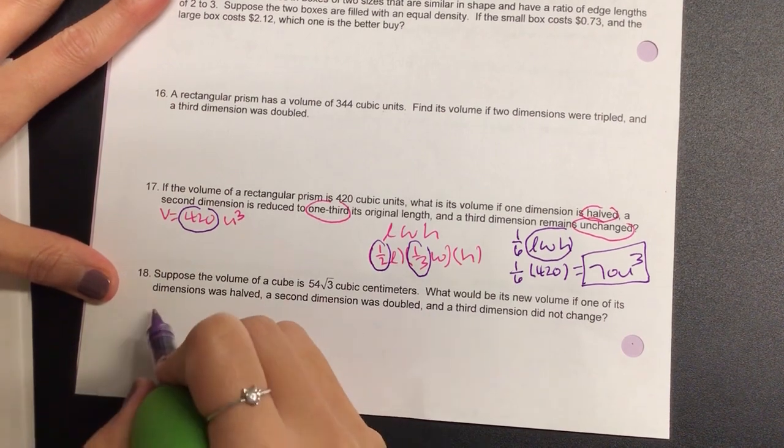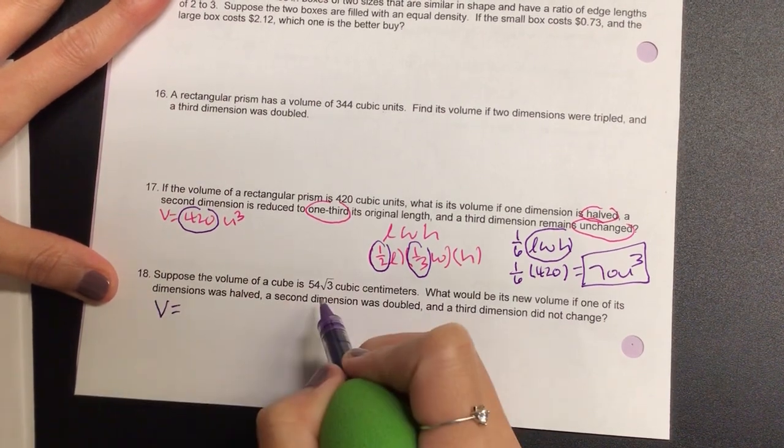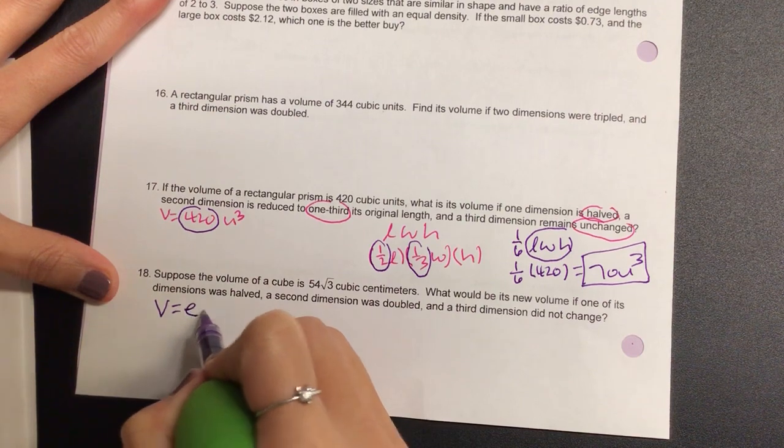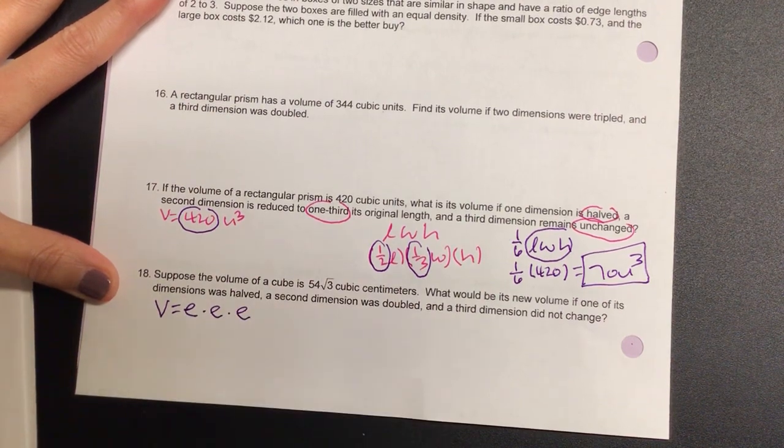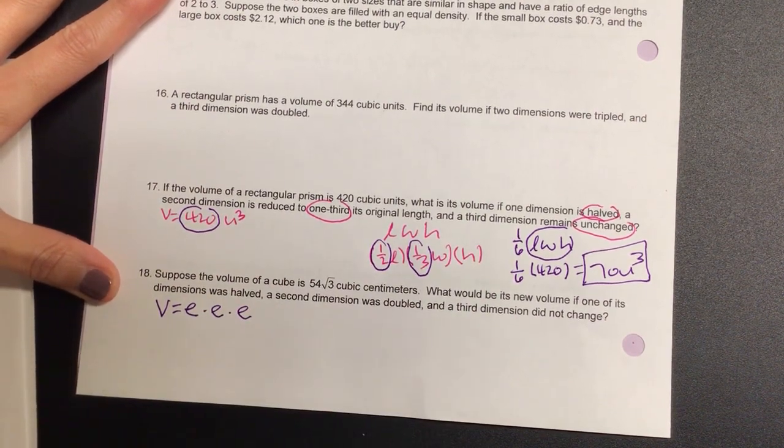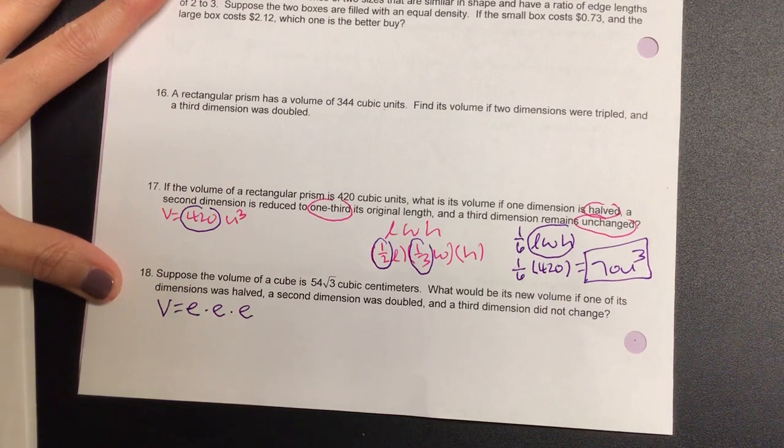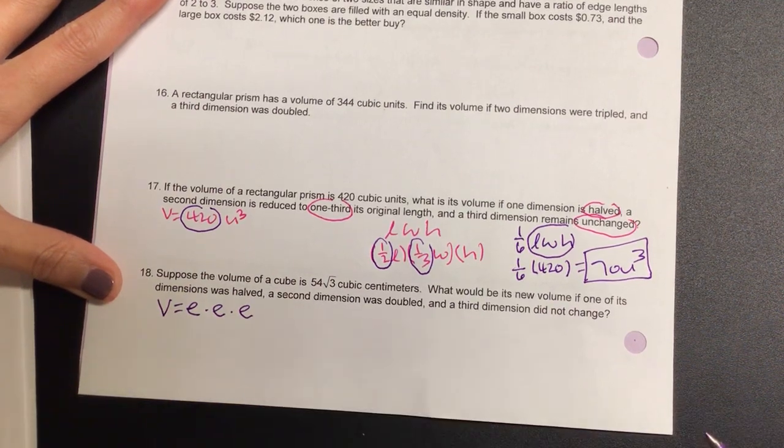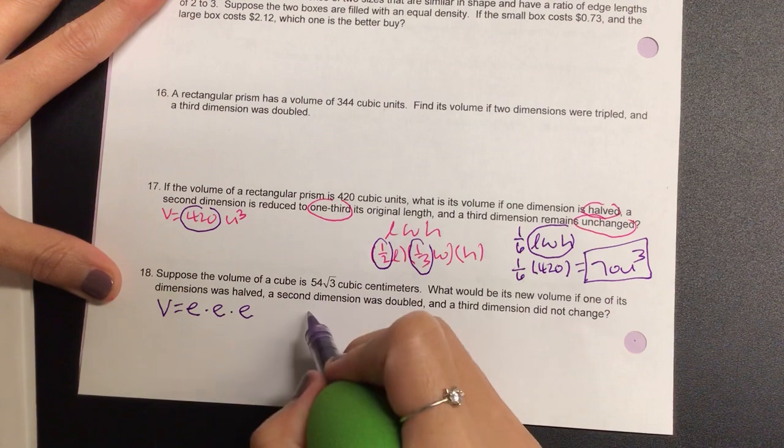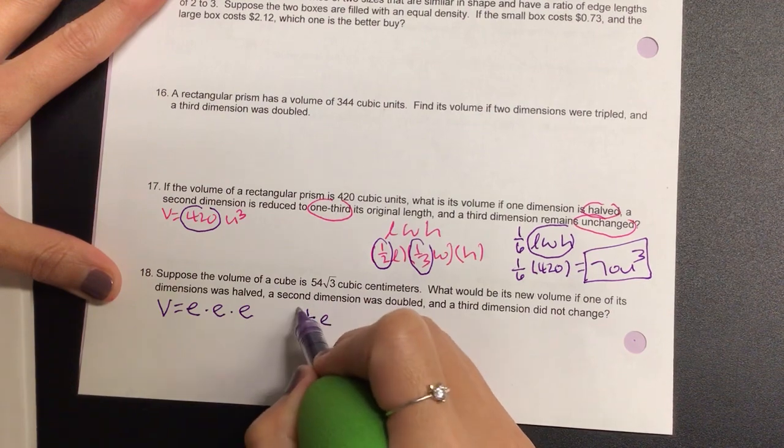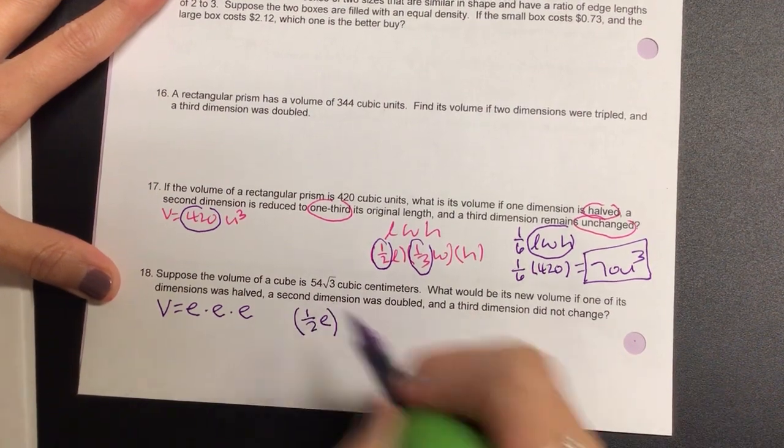Okay, so we have the volume of a cube. For teaching purposes, I'm gonna write e times e times e, because each individual is going to change. Are we okay with that? Okay, so it says one dimension is halved, so we have half of the e. Second one is doubled, so we have two times e. The third did not change, that's just the e.